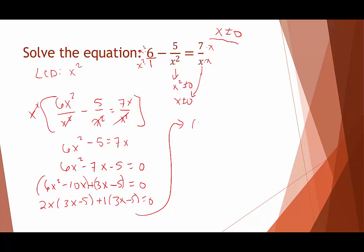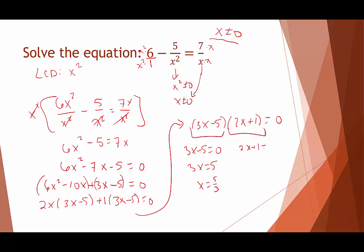Pulling out the GCF from both terms gives (3x minus 5)(2x plus 1) equals 0. Setting each factor to 0: 3x minus 5 equals 0 gives x equals 5 thirds; and 2x plus 1 equals 0 gives x equals negative 1 half. Checking against the restriction that x cannot be 0 — neither solution is 0 — so the solution set is x equals negative one half and five thirds.